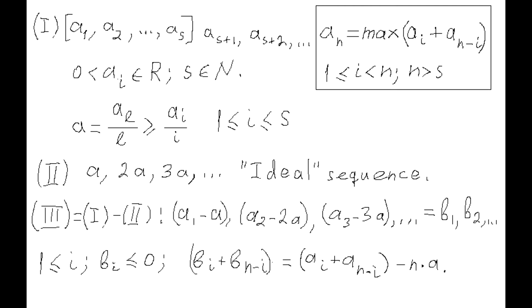By definition, all members of the third sequence b_1, b_2, etc. are either zeros or negative numbers. It is also easy to see that all members of the first and third sequences whose indices are greater than s are sums of preceding members with the same corresponding indices. This is because for any given n and all i less than n, any sum b_i plus b_{n-i} equals the corresponding sum a_i plus a_{n-i} minus n times a. So the selection of index i which forms the values of a_n and b_n is the same.